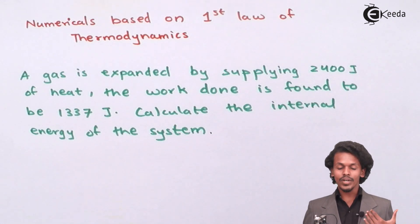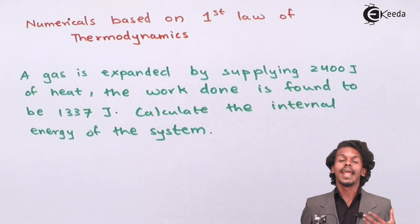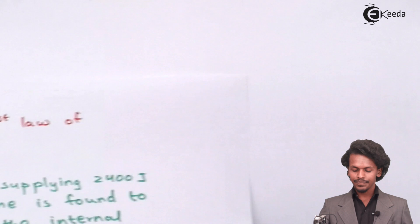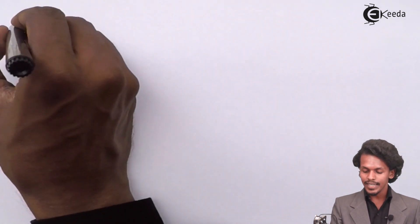In this case, let us extract the given data first and find out what is required. They have asked about 2400 joules of heat being supplied. So the given data says: